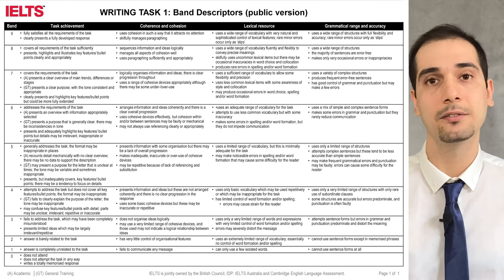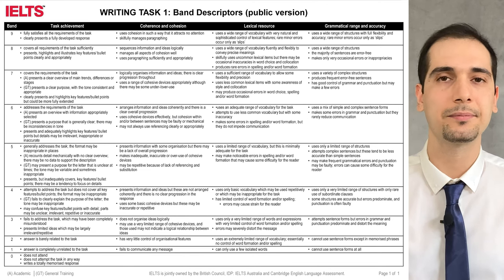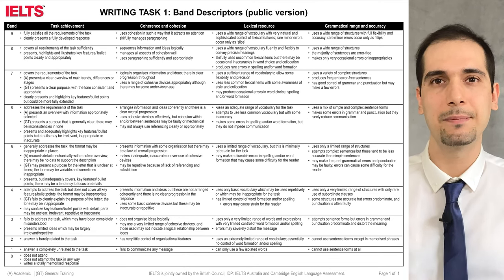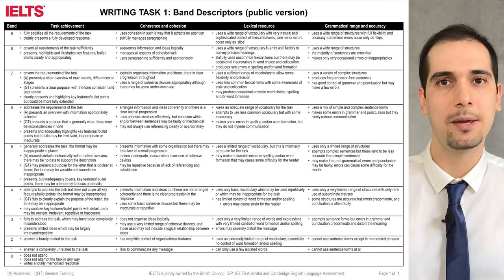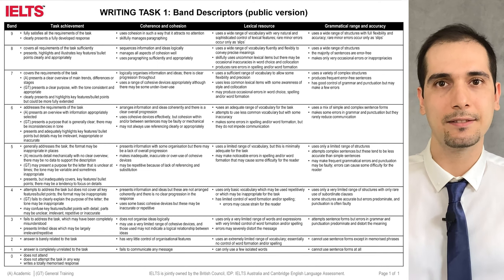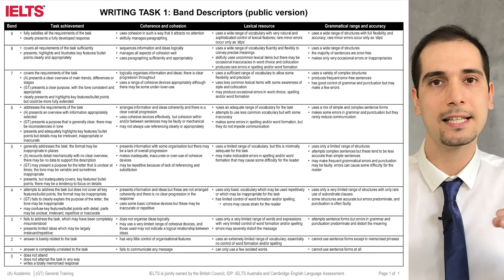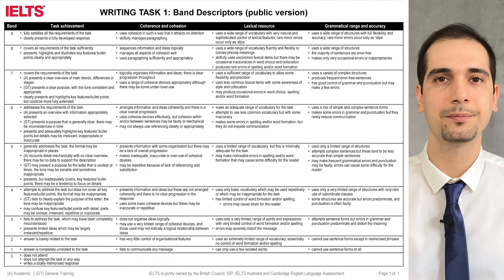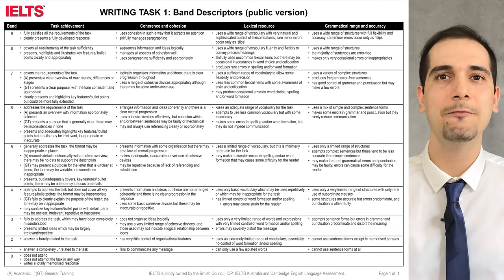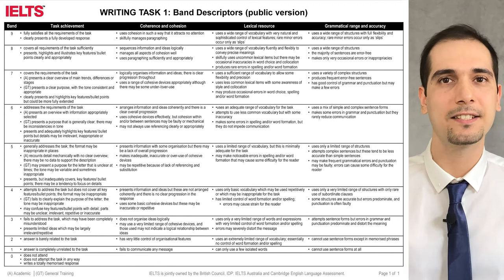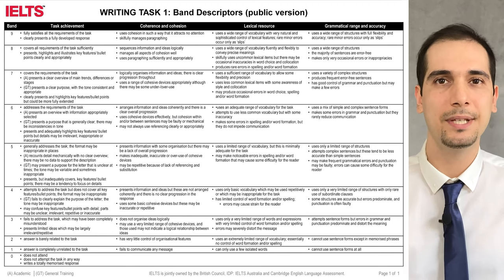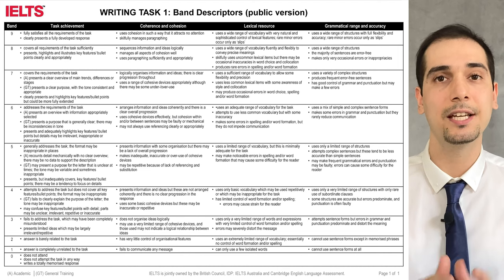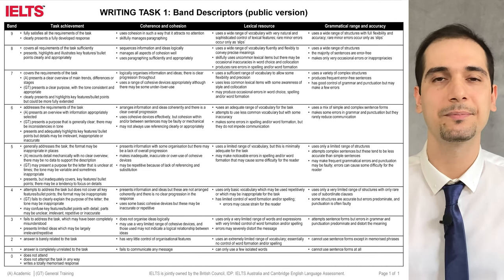If you are looking for a band score of six or seven, it's a great idea to spend a little time and read the description for that specific band score. I have put the links to these files in the description below — please go there and download them in PDF so that you can zoom in and read them carefully.